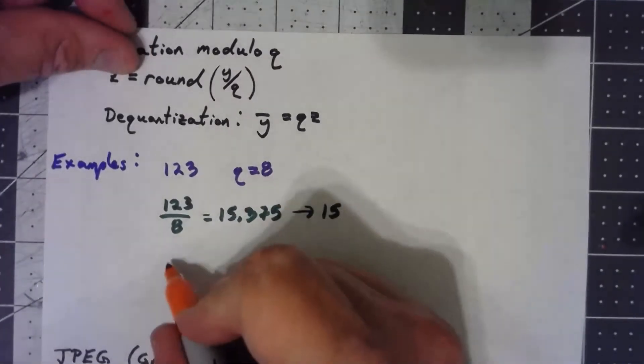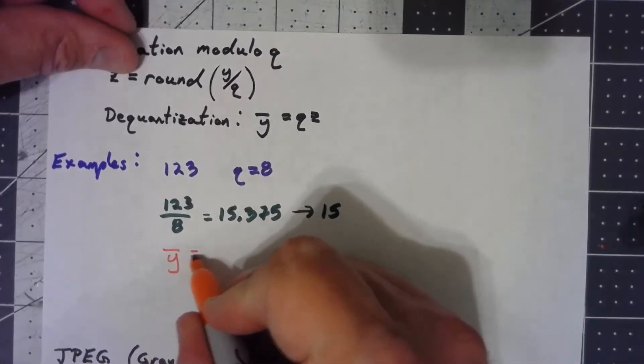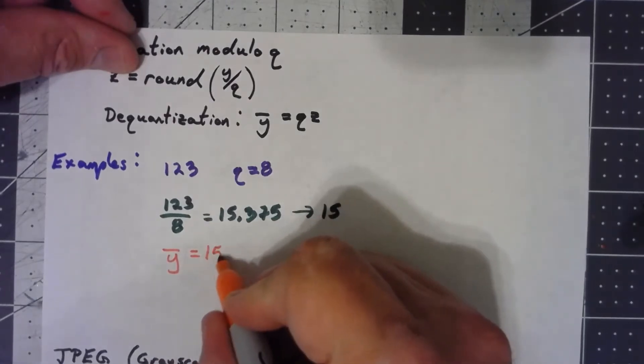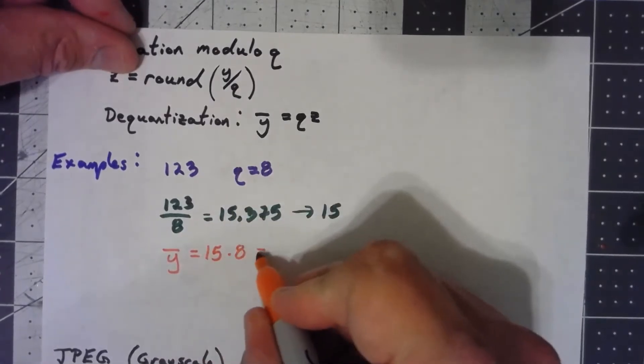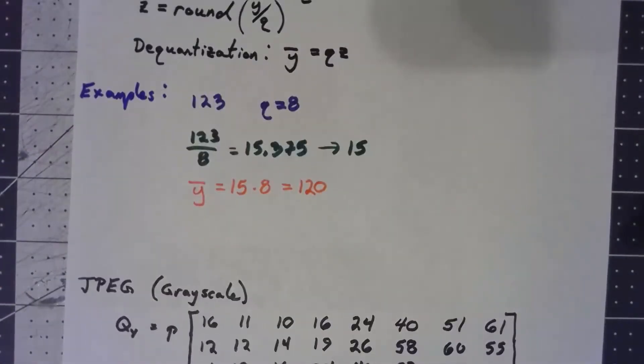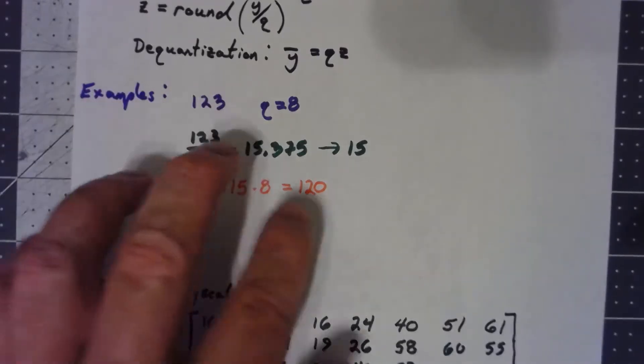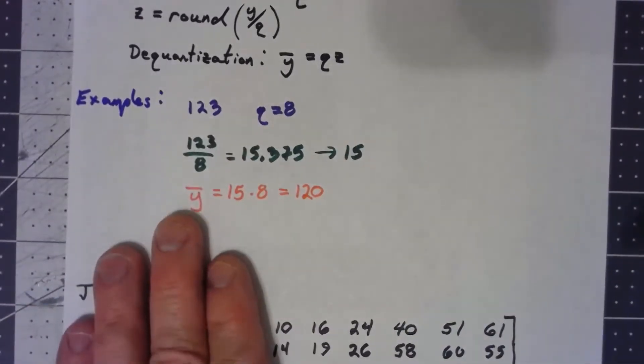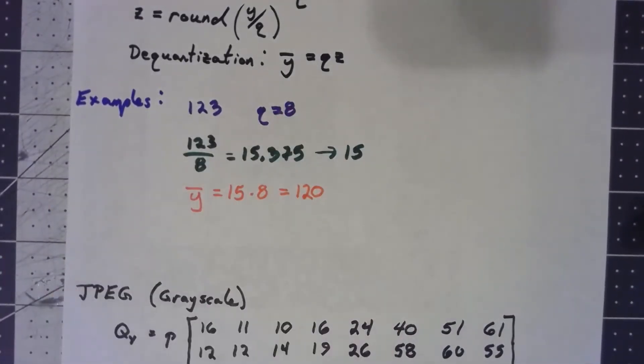But to dequantize or unquantize, I'm just going to take the 15 times the 8 and get 120. You can see it's not exactly what that thing is, but it's a whole lot better than saying we're just going to completely ignore it and call it zero. You end up getting very little roundoff here depending on what your q is.